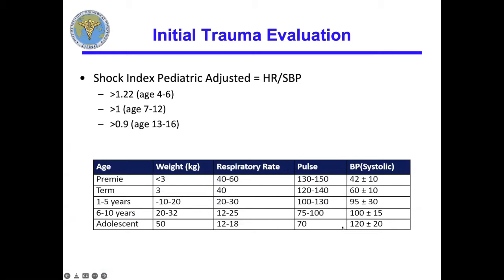This is a newer measure people are starting to use. One concern is not knowing the normal blood pressure for a one- or two-year-old. A chart is helpful in your resuscitation bay. One tool I've used: in a one-year-old, systolic blood pressure should be around 100, pulse around 100. No baby should have a mean pressure less than their estimated gestational age, and certainly not less than 40. The Shock Index Pediatric Adjusted — SIPA — gives you just three numbers to memorize instead of the whole chart.